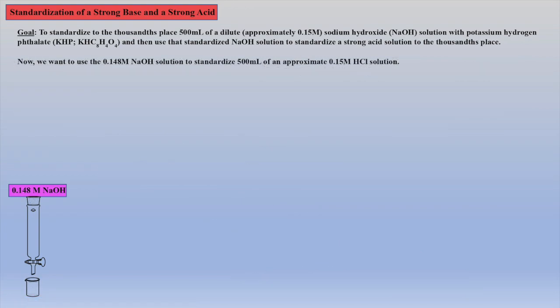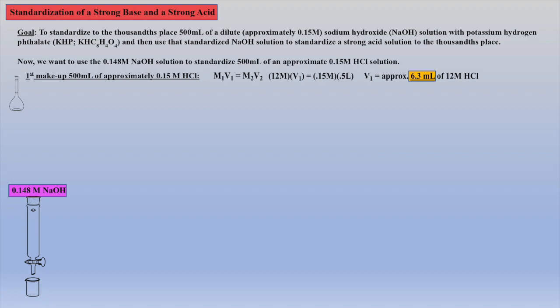Now that our base is standardized — sodium hydroxide molarity is known accurately, here to the thousandths place — we can now use it to titrate and standardize an acid solution. In our lab we need 500 milliliters of approximately 0.15 molar hydrochloric acid solution standardized. First, we make the approximate 0.15 molar solution of HCl by diluting a 12 molar stock solution. The M1V1 = M2V2 calculation indicates that if we dilute 6.3 milliliters of the 12 molar stock HCl to 500 milliliters, the concentration will be approximately 0.15 molar. We obtain a 500 milliliter volumetric flask, fill halfway with distilled water, add the 6.3 milliliters of 12 molar HCl carefully, cool if necessary, and dilute to the line.